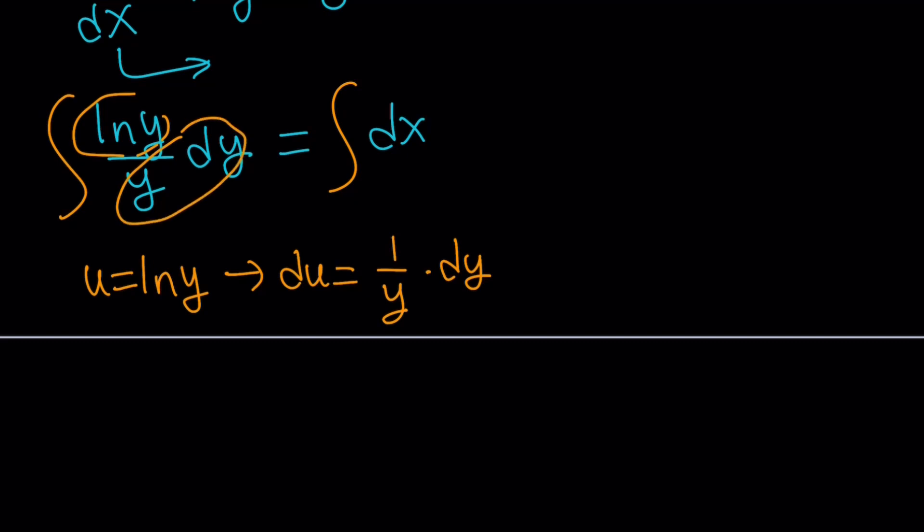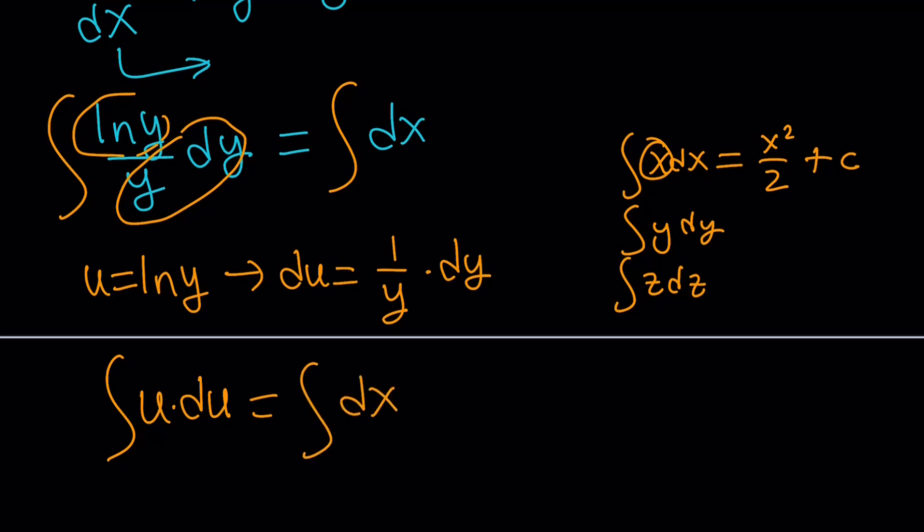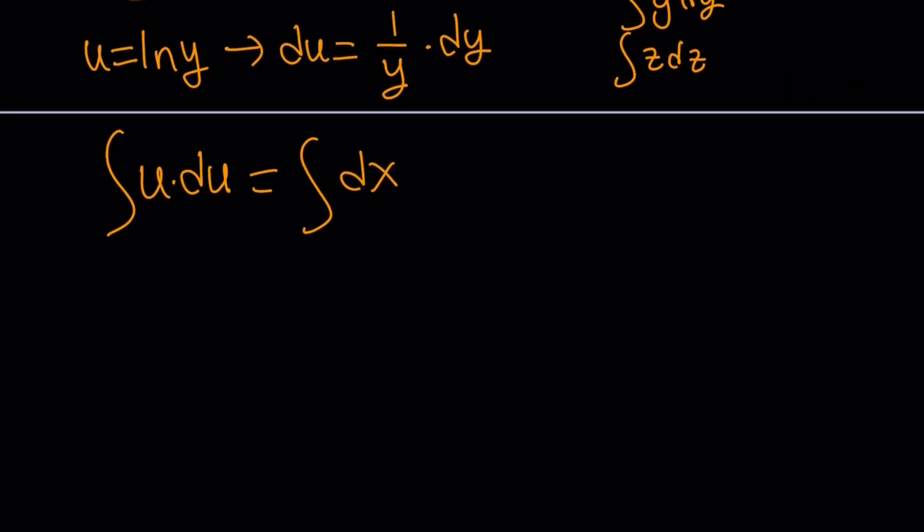I just got u du. When you get an integral like this, it's the same thing as x dx or y dy. The variable is just dummy. The integral of x from power rule is x squared over 2. Never, ever forget the constant c. So this is going to be u squared over 2. I'm going to put the constant on the right-hand side, so this is u squared over 2, and the integral of dx is going to be x plus the constant.